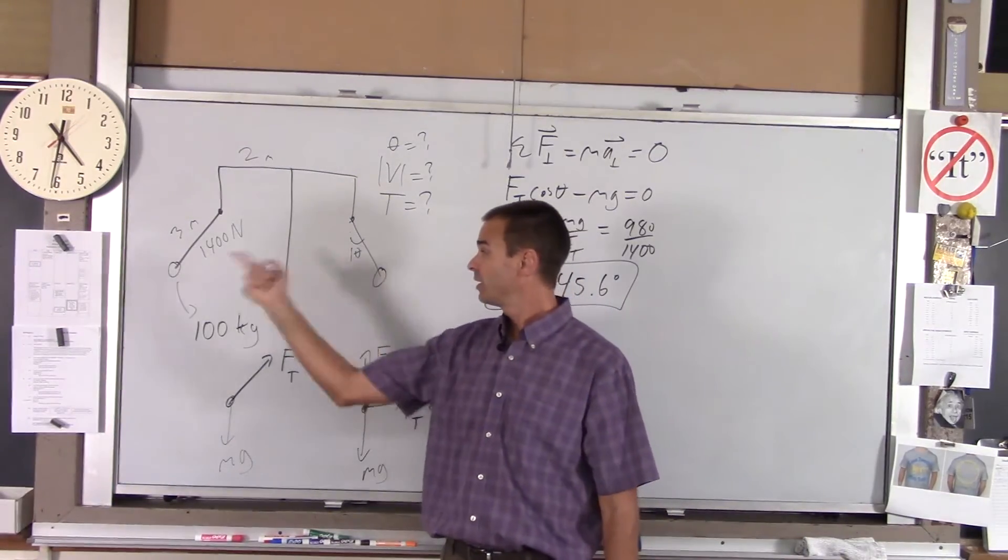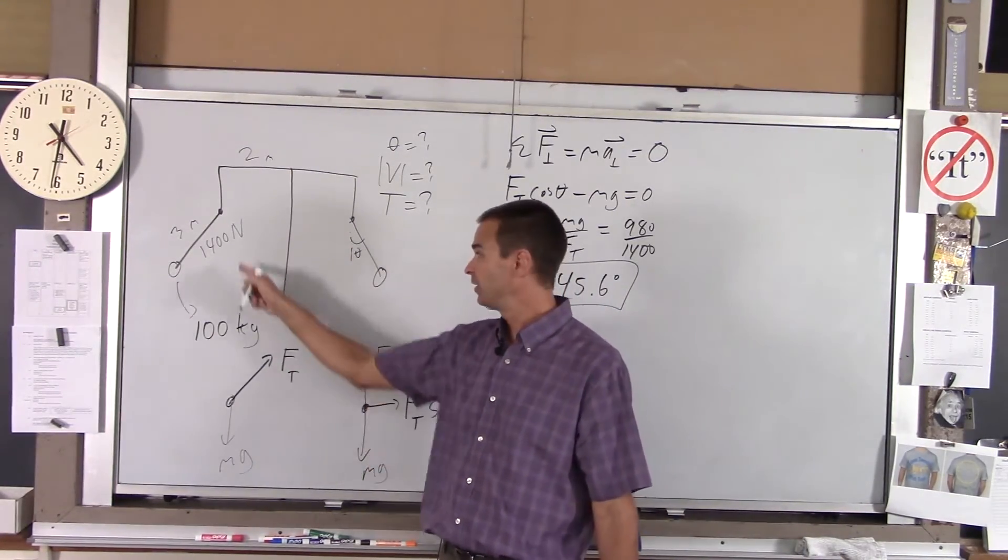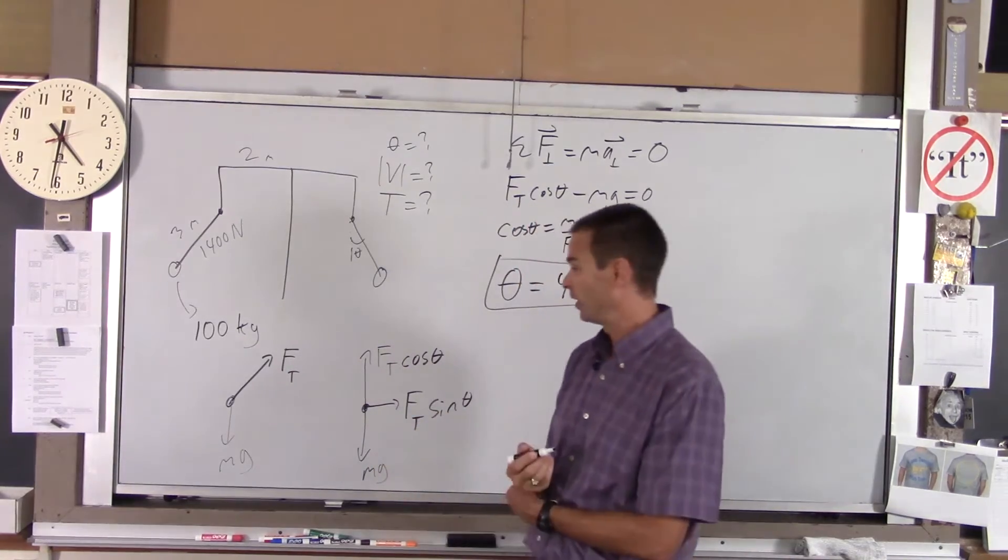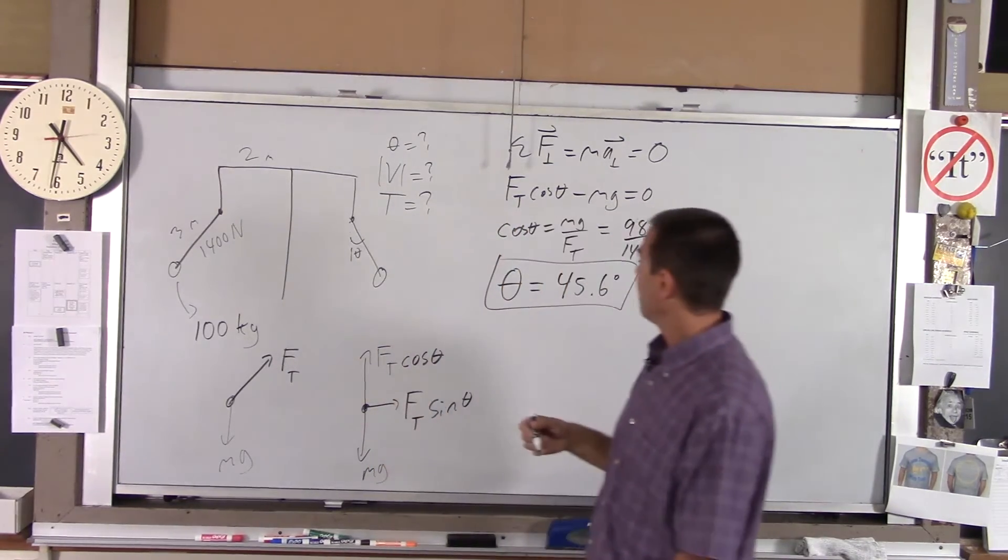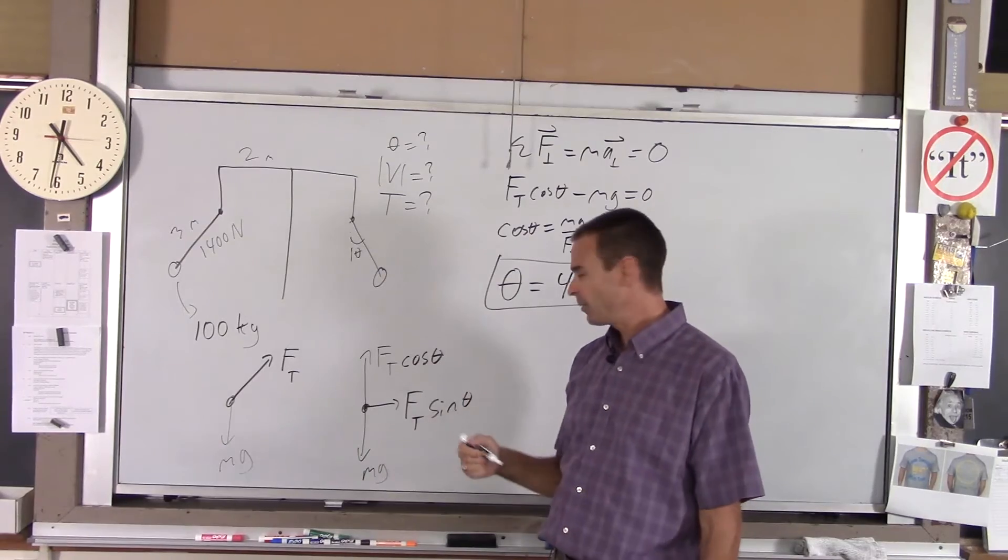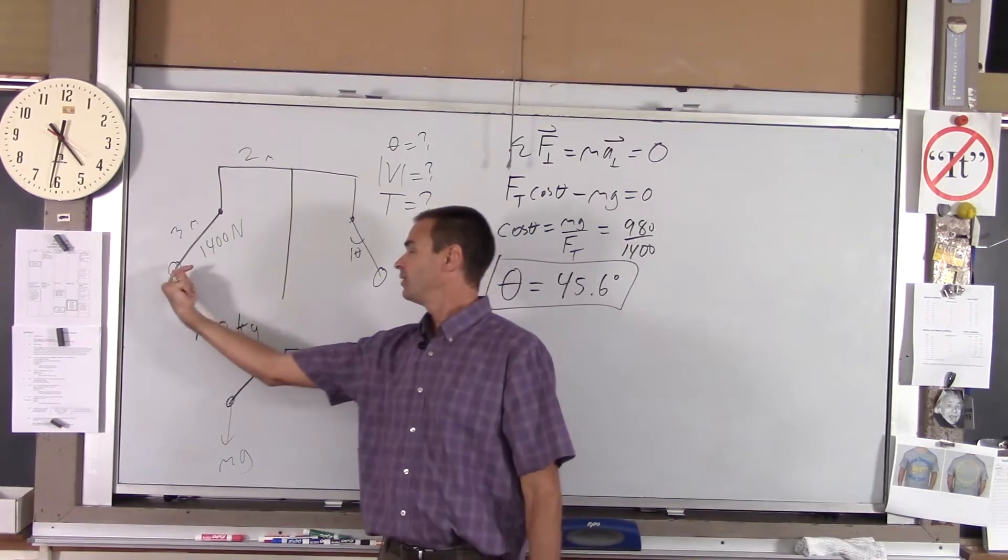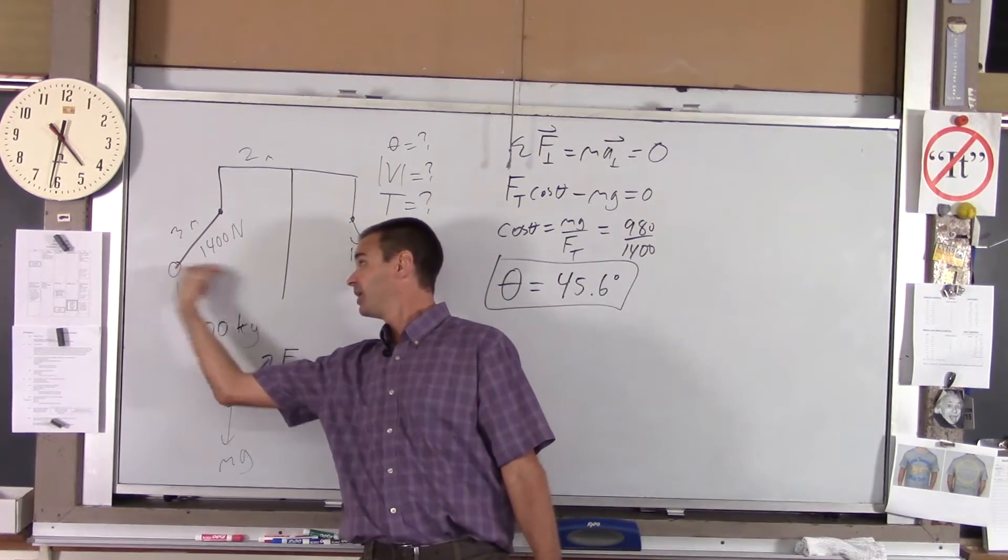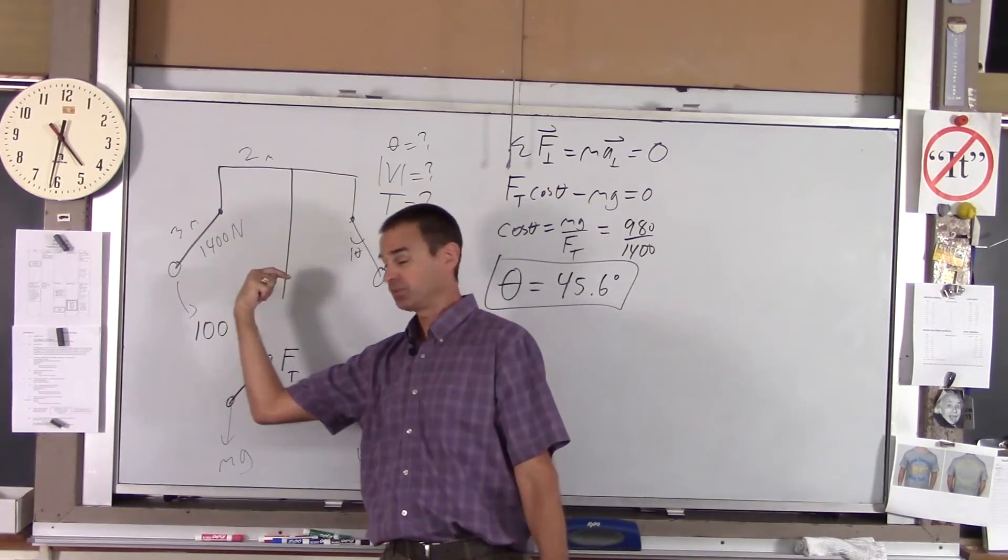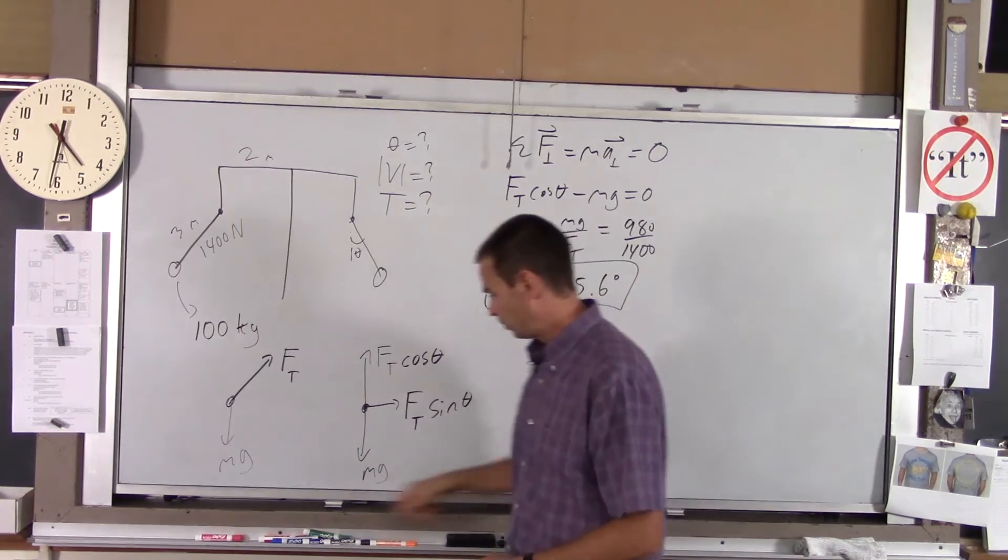So that's your angle that you'll be moving at. That's this angle here. When the thing is going at its max velocity, such the tension is 1400 newtons. Now, what is that velocity? Well, now we've got to look in the radial direction. He's going in a circle. At this moment, the radial acceleration is going to be inward, toward the center of the circle.